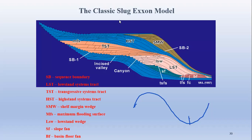Type 1 sequence boundaries deposit during the fall of sea level. Due to this fall, basin floor fans, slope fans, and the low stand wedge develop. In short, the low stand system track develops during the fall of sea level at this stage of the sea level cycle.